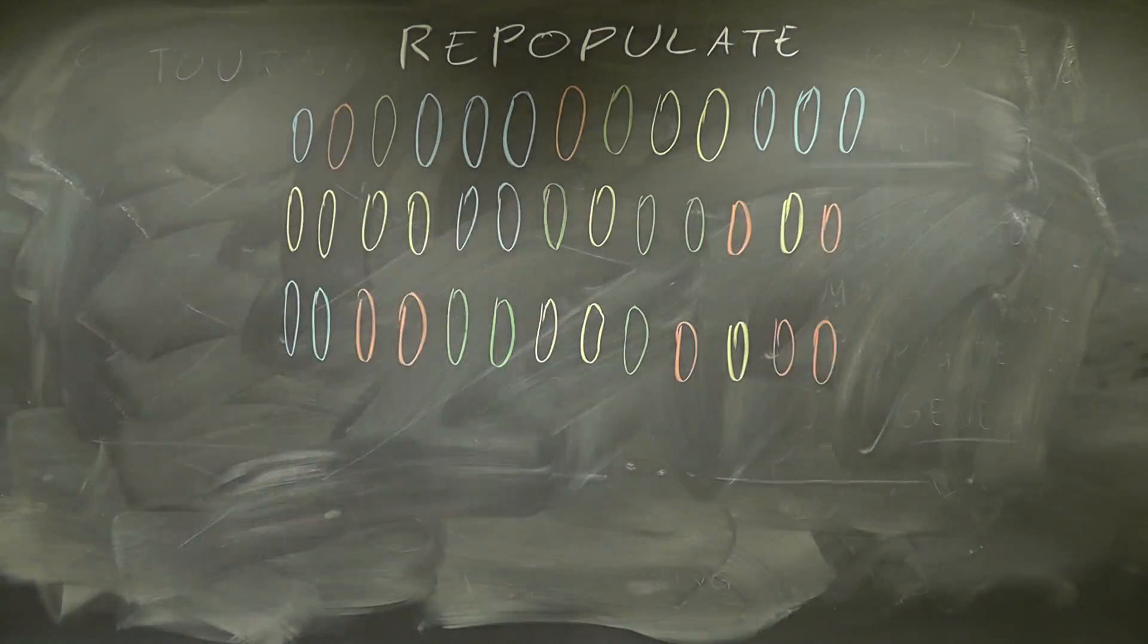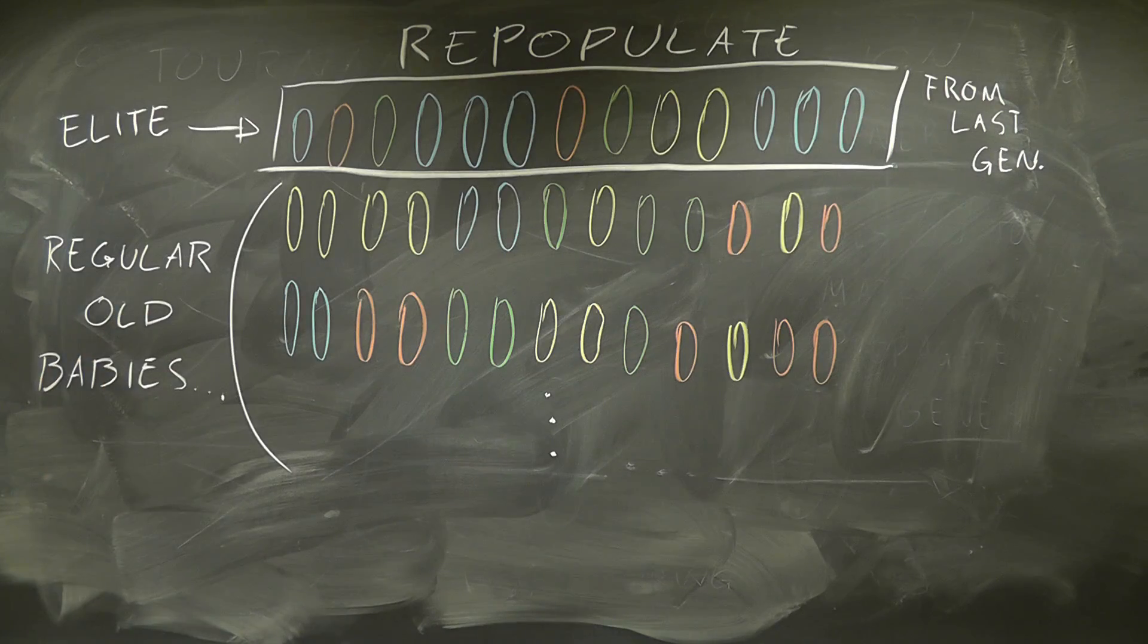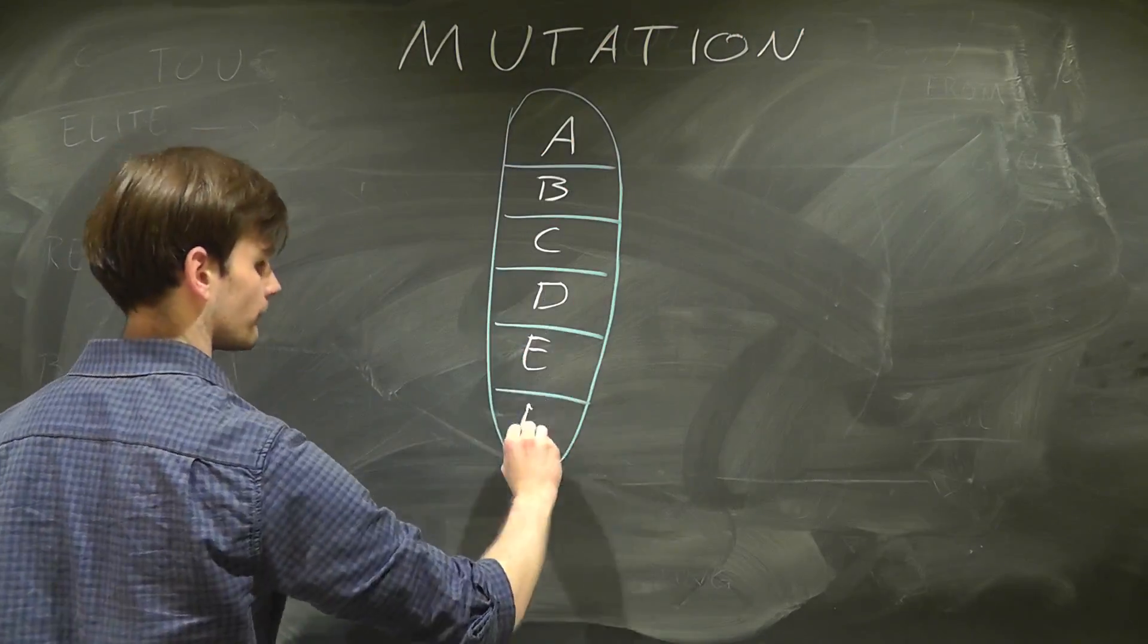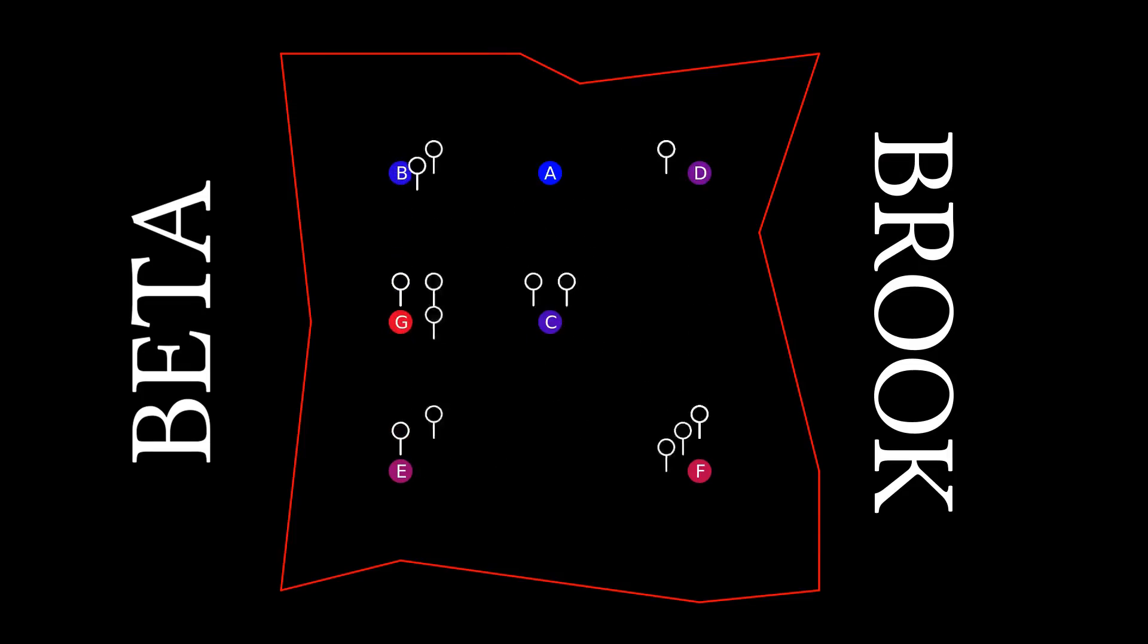Oftentimes, the new generation will keep the best or the elite from the previous generation, but this is not always done. At this point, we could also introduce mutation by swapping towns at random for certain individuals. Once we have a new set of chromosomes, we run the simulation again.